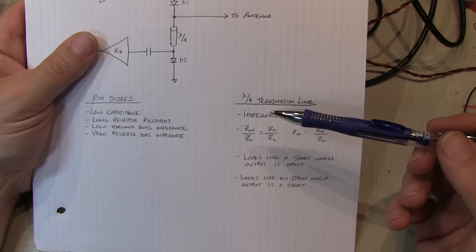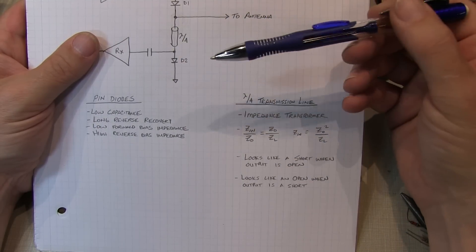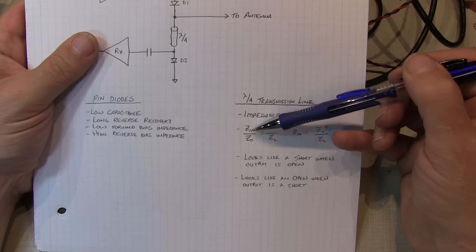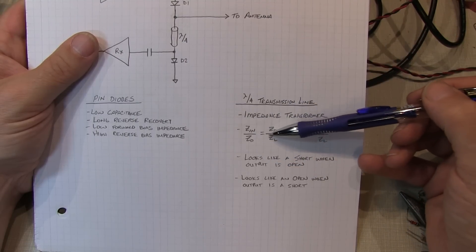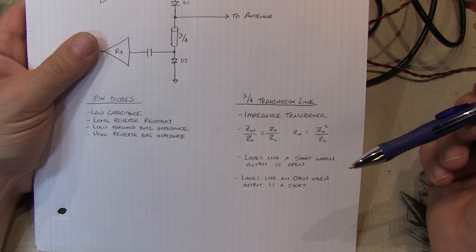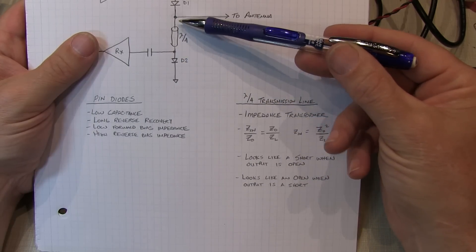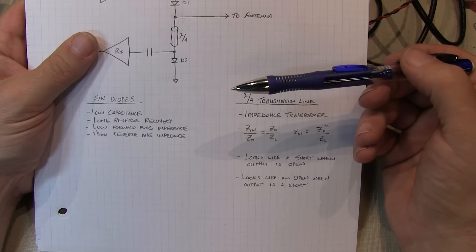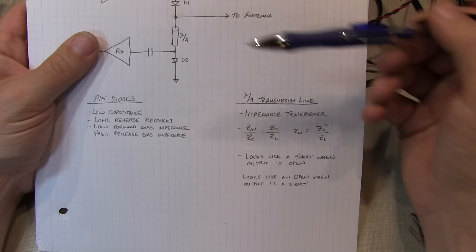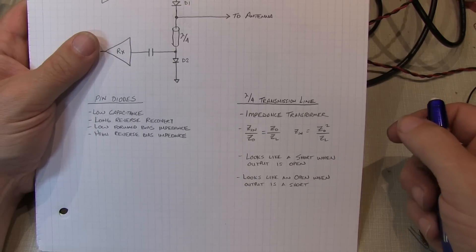Now, a quarter wavelength long transmission line is an impedance transformer, and it's kind of a special case that the impedance that's presented looking into the line is essentially the dual or the inverse of the impedance at the other end. This is the relationship. So the input impedance of the line divided by the line impedance is equal to the line impedance divided by whatever is connected to the load. So you can see how the impedance kind of inverts. What this means is that if you short out, if you place a short at this point to ground, it will look like an open at the frequency at which this is a quarter wavelength. And similarly, if you leave this end of the transmission line open, the load side, it'll look like a short circuit at this end at that frequency. So it presents that kind of inverse or dual impedance, and we're going to take advantage of that in the way this switch works.